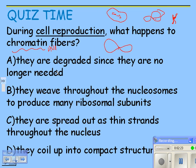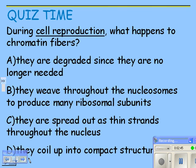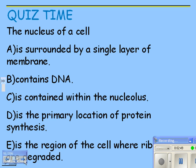Working through the answer choices: the DNA is degraded — no. The DNA weaves throughout the nucleosomes to produce ribosomal subunits — no, that's when you're making ribosomes, not when you're separating chromosomes. They are spread out as thin strands throughout the nucleus — no, they would break. The correct answer is D: they coil up into compact structures.